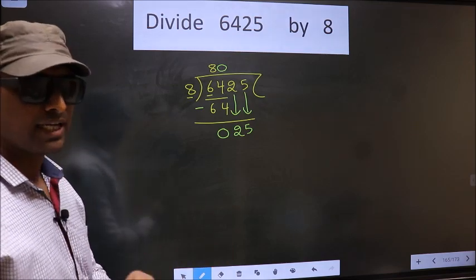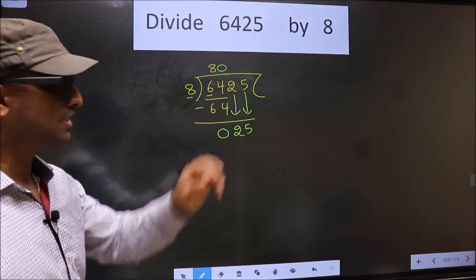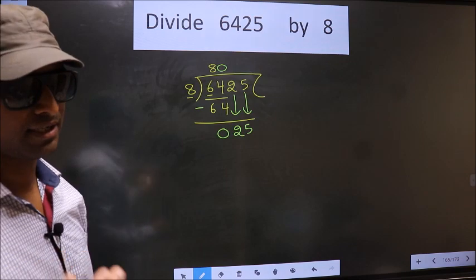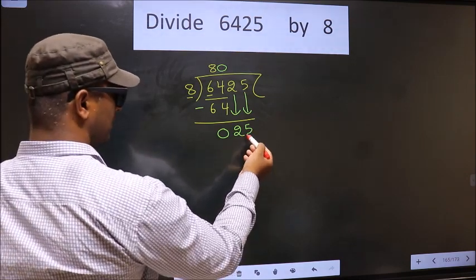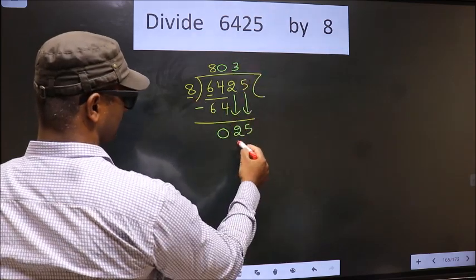I repeat. Whenever you brought down 2 numbers, then compulsory put 0 in the quotient. Remember this point. Next, here we have 25. A number close to 25 in 8 table is 8 times 3, which is 24.